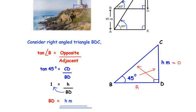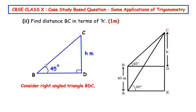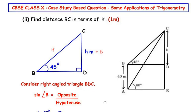Now let us find the distance BC in terms of h. We again consider triangle BDC. The side opposite to 45 degrees is CD, which is the opposite side. The side opposite to 90 degrees is always the hypotenuse, and the remaining side defaults to the adjacent side. Since we need to find BC and we already have the opposite side, we do not need the adjacent side. The trigonometric ratio using the opposite side and the hypotenuse is sine. So sin of angle B equals opposite over hypotenuse.